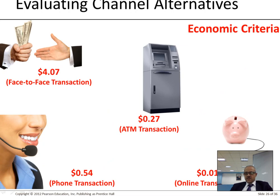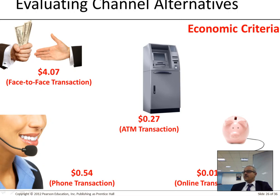Evaluating channel alternatives: consider the cost per transaction. For telecom services, a face-to-face transaction costs $4, through an ATM machine $0.27, and an online transaction costs even less per transaction — though for a company like Amazon with billions of transactions, total cost is still millions. Phone transactions cost somewhere in between.